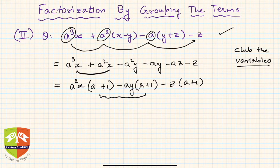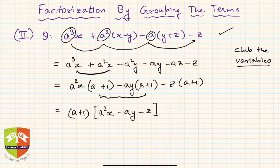If we get the same a+1 in the third, which we'll indeed get if you take -z, then we have been able to find one common factor and that is a+1. So let us take a+1 as common factor and then within brackets what is it? a²x - ay - z.